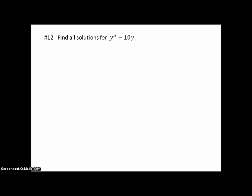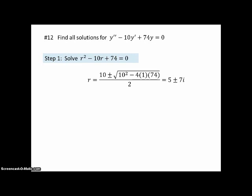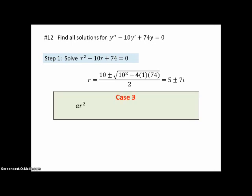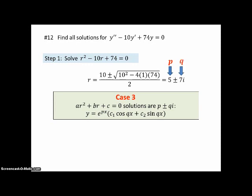Problem 12: find all solutions for this homogeneous linear second-order differential equation. Solving the quadratic — it didn't factor, so using the quadratic formula gives 5 ± 7i. This is Case 3. Here p is the real part and q is the absolute value of the coefficient of i, so the general solution is e^(5x)(c₁cos(7x) + c₂sin(7x)).